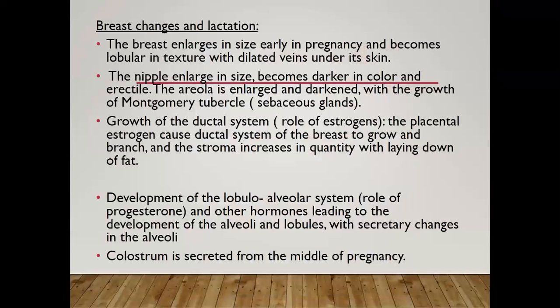Regarding breast changes and lactation, the breast enlarges early in pregnancy and becomes lobular in texture with dilated veins under the skin. The nipples enlarge, become darker, and become erectile. The areola enlarges and darkens with the growth of Montgomery tubercles, which are sebaceous glands. Placental estrogen causes the ductal system to grow with more branches, and the stroma increases with more fat deposition. Progesterone drives development of the lobular system, alveoli, and lobules with secretory changes.